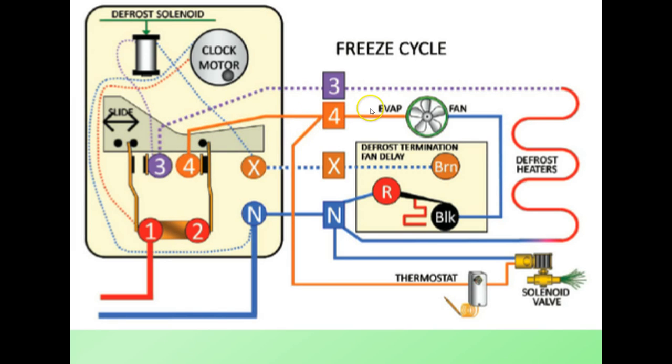We're on the neutral side of the evap fan, so we do have 115 volts coming to the fan. Let's follow this neutral back, see if we have a complete circuit through the defrost termination fan delay back to neutral. We have a complete circuit. The fan is operating.